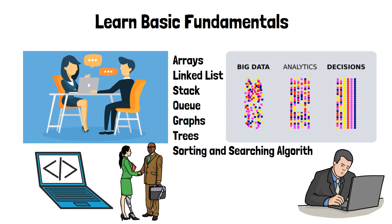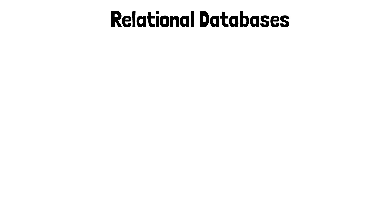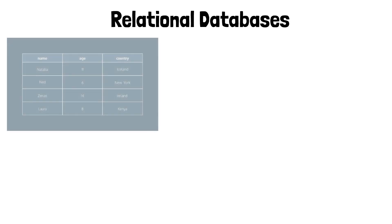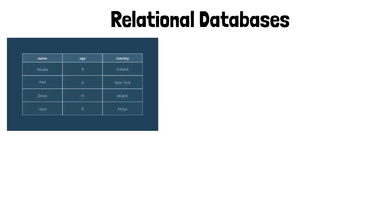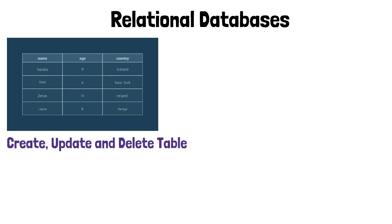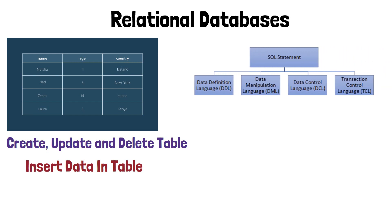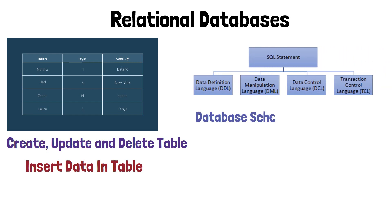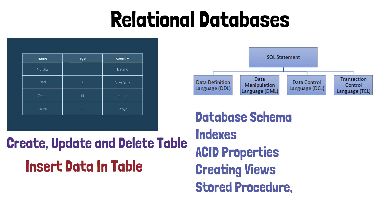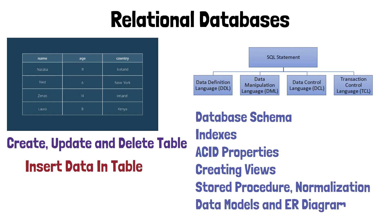Number three is learning the fundamentals of databases. There are different types of databases available, but as a beginner you just need to learn relational databases, which store data in rows and columns like an Excel file. Things to learn include how to create, update, and delete tables; how to insert data — these operations are known as DDL (Data Definition Language), DCL (Data Control Language), and DML (Data Manipulation Language). You will also need to learn database schema, indexes, ACID properties, views, stored procedures, normalization, data models, and ER diagrams.